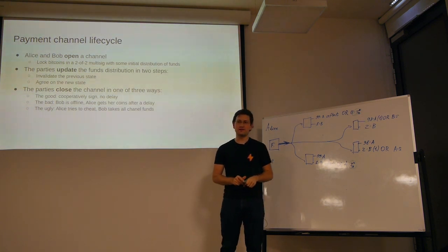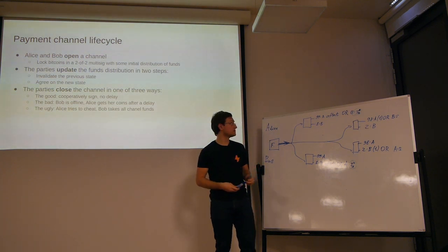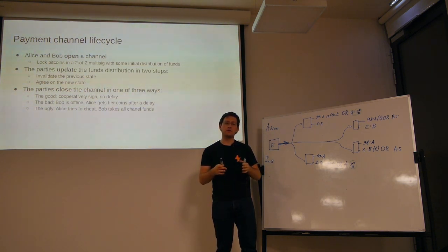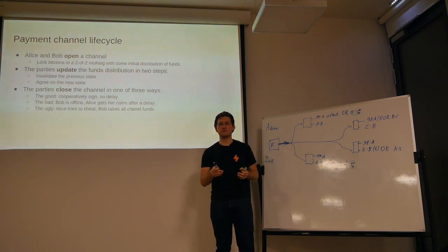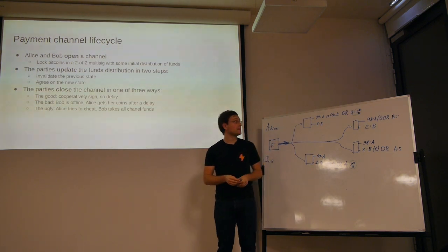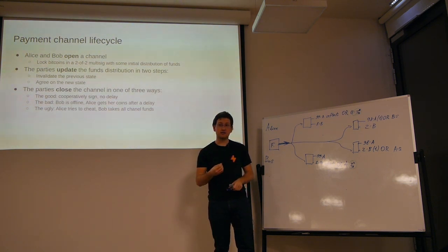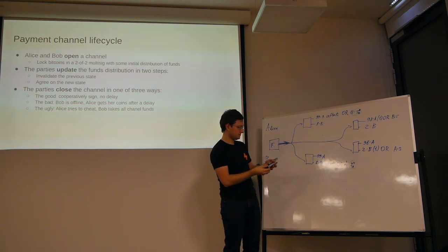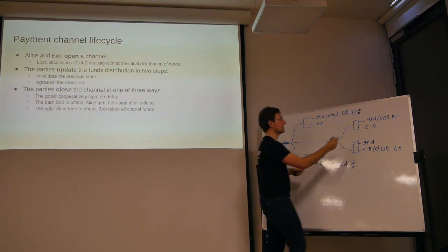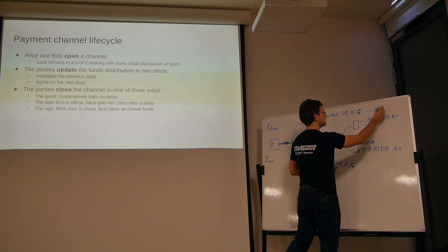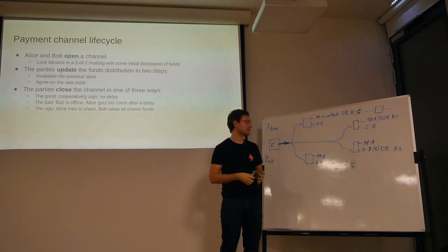This is why segregated witness was important for Lightning. Before the 2017 SegWit update, it was impossible to predict what the hash of a transaction would be, because it was possible to modify a transaction such that the semantics remained the same but the hash was different — so if you're monitoring the blockchain, you wouldn't know what to look for. After SegWit was implemented, it became possible to create a transaction which depends on another transaction that is not yet on the blockchain. So Bob already has a signed transaction in his computer — he just doesn't broadcast it yet, but it's already signed and ready.